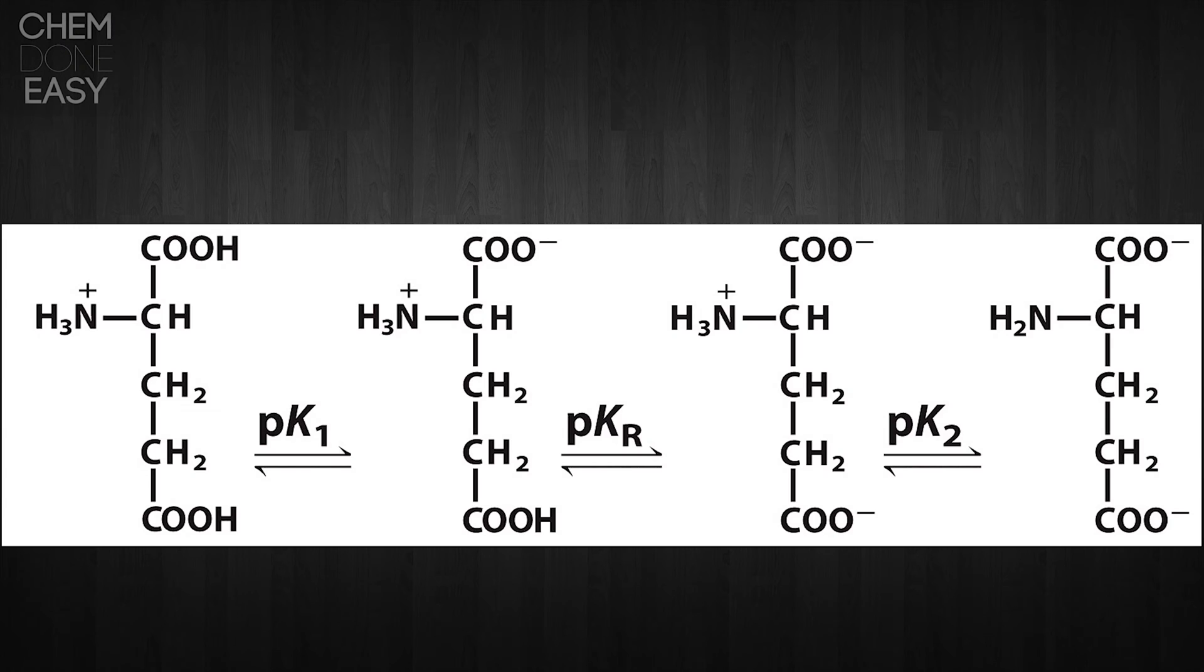So if we have a look at glutamate or glutamic acid, we can see that it has four different structures, whereas glycine only had three. So the first thing that we need to do is look at each of our four structures and we need to determine which one has the neutral charge.